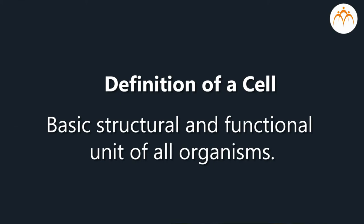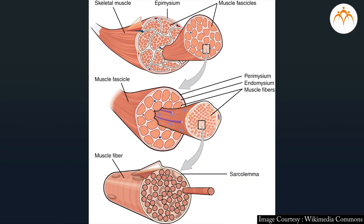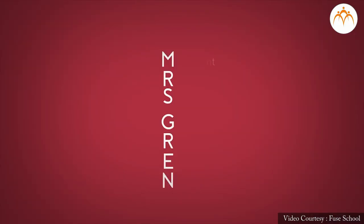Dear students, we now summarize the points covered in this session. 1. Definition of the term cell, cell size and components of cell. 2. Formation of complex body organization from cells. 3. Key features of living things or organisms.